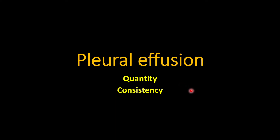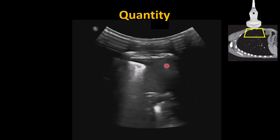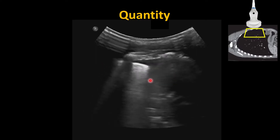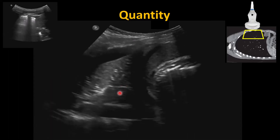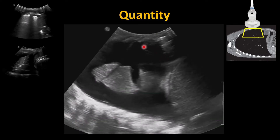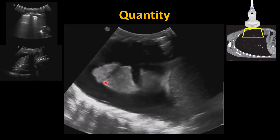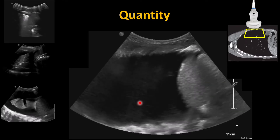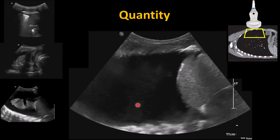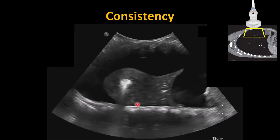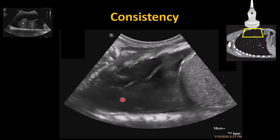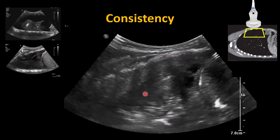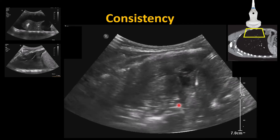Ultrasound is also useful for assessing pleural effusion in terms of quantity and consistency. Using the curvilinear probe, you can see a small amount of pleural effusion at the lung base adjacent to the liver. As the effusion increases, you can assess the growing amount of fluid with the consolidated lung in the midline. In massive pleural effusion, lung collapse is visible. You can also assess the consistency of the fluid — clean fluid appears black, while the presence of fibrin or thickening indicates a more complex, exudative effusion.